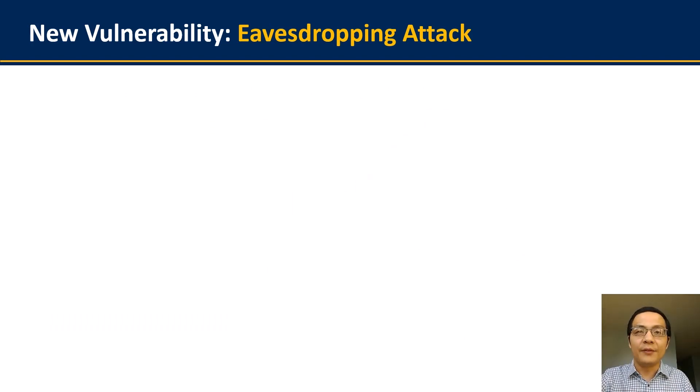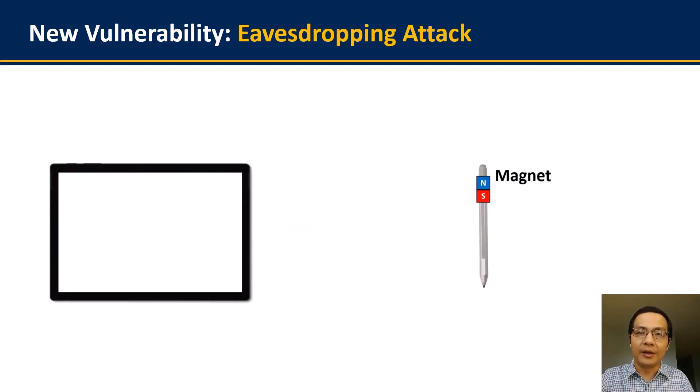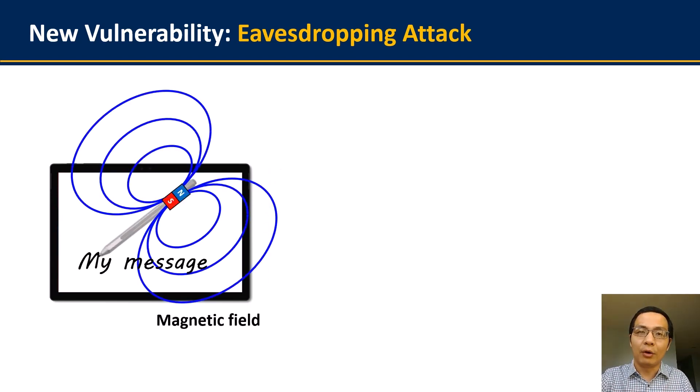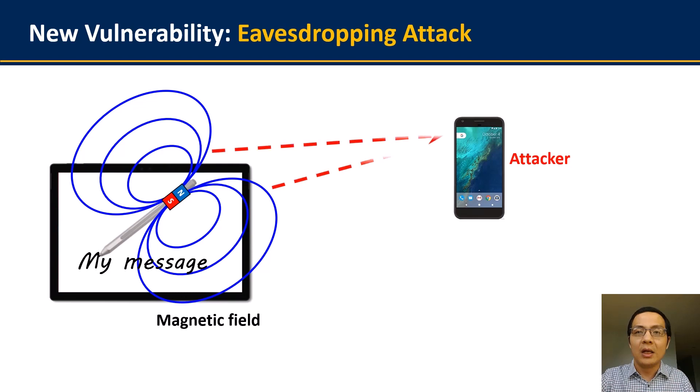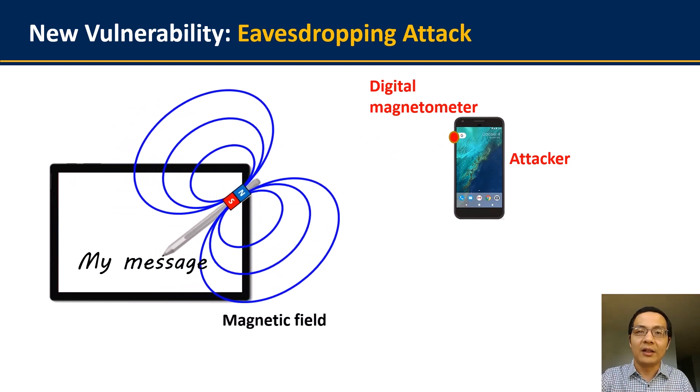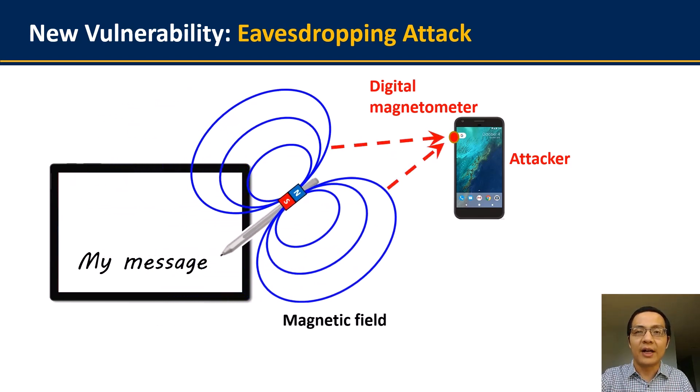However, this convenient input method also brings a new interesting yet important security vulnerability that allows the attacker to remotely eavesdrop the mobile user's handwriting inputs. The main reason of this vulnerability comes from the stylus pen's internal magnet that helps the pen to adhere as accessory to the mobile device. This magnet will automatically change the magnetic field in the surroundings. If we have a nearby attacking device with a digital magnetometer, such fluctuation of the magnetic field, when the user handwrites and moves the stylus pen, can be timely captured by the nearby magnetometer, and such magnetic sensing data can then be used and analyzed to infer the user's handwriting.